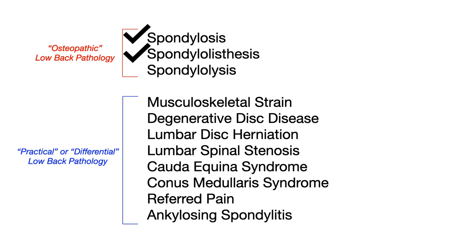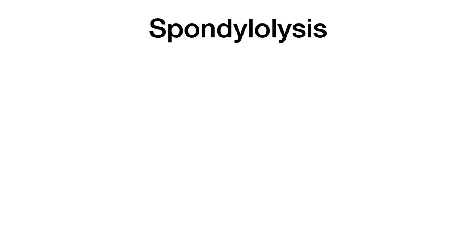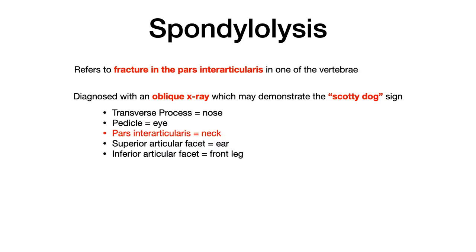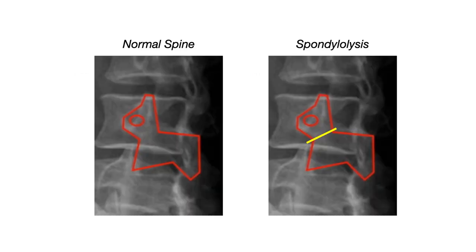The last of the three terms is spondylolysis, which refers to a fracture in the pars interarticularis of one of the vertebrae. This is diagnosed with an oblique X-ray, and if the patient indeed has spondylolysis — a fracture in their pars interarticularis — it's going to reveal what's known as the Scotty dog sign. The Scotty dog sign is very high yield because if you see a lumbar spine image on COMLEX there's a very high chance it will be showing you the Scotty dog. On the left you see the normal spine with the borders of the vertebrae drawn in red, and on the right you see spondylolysis shown with a collar on the Scotty dog.